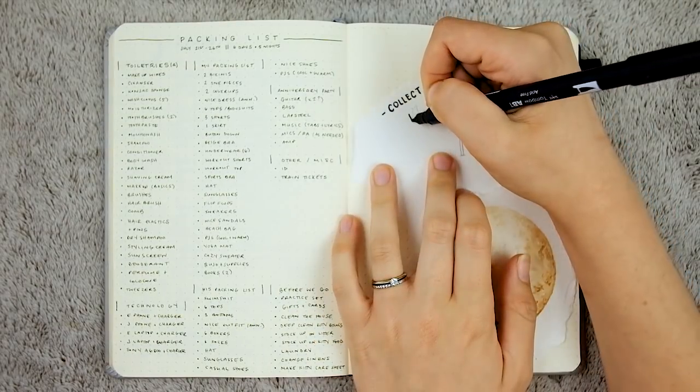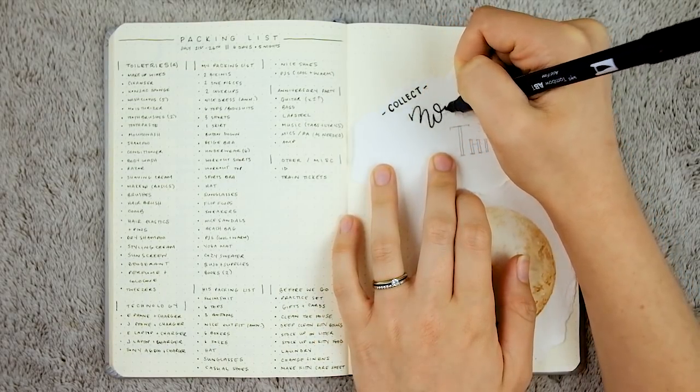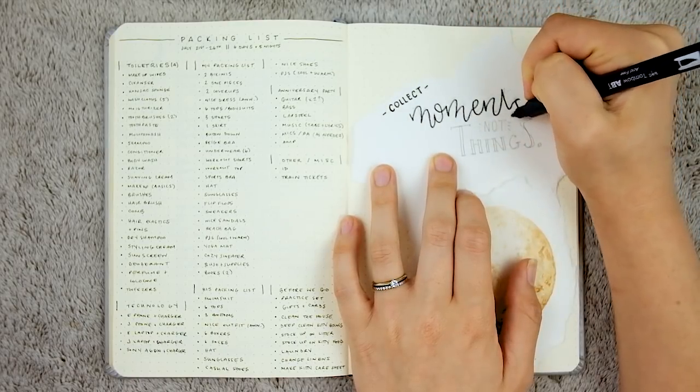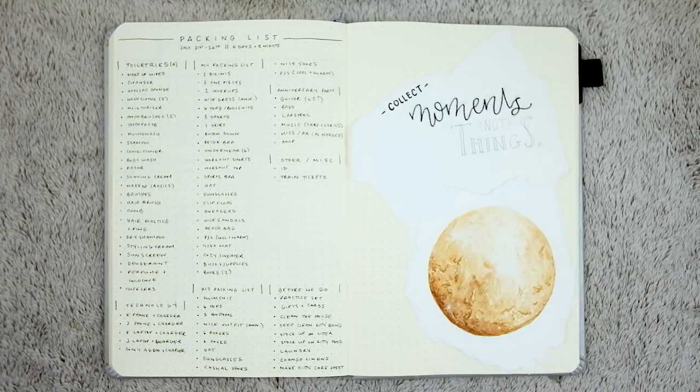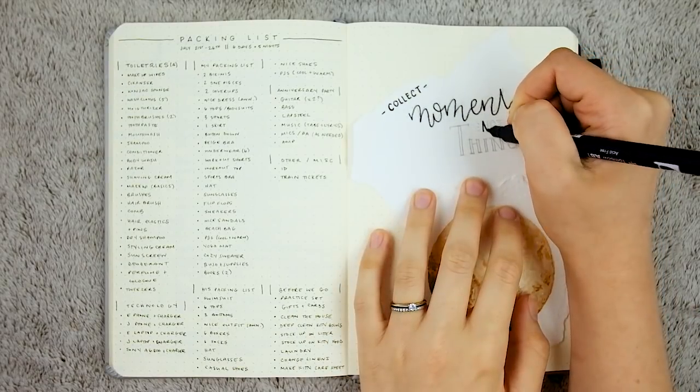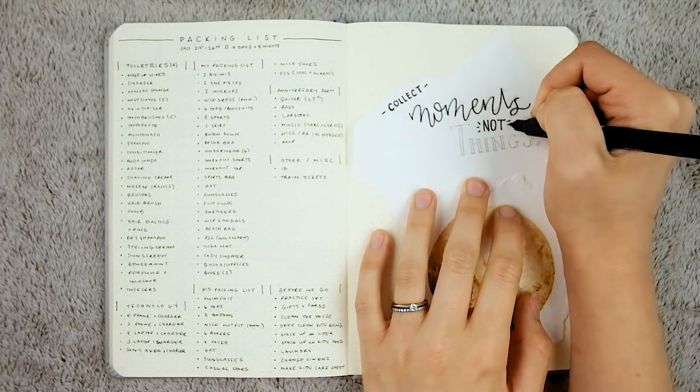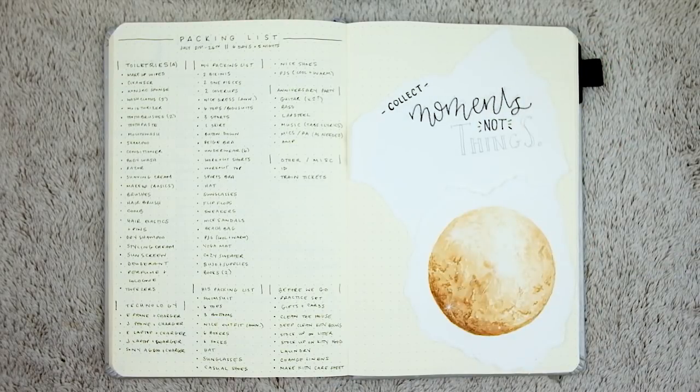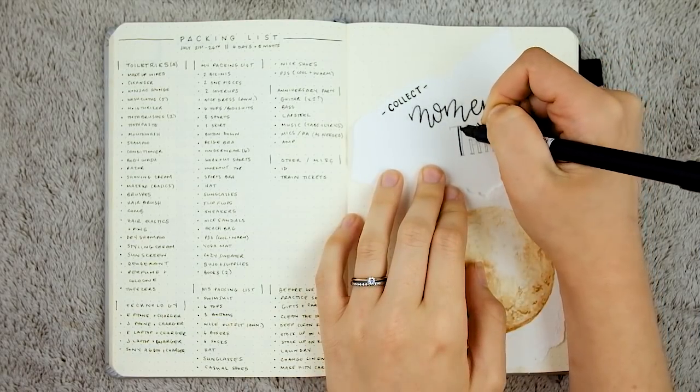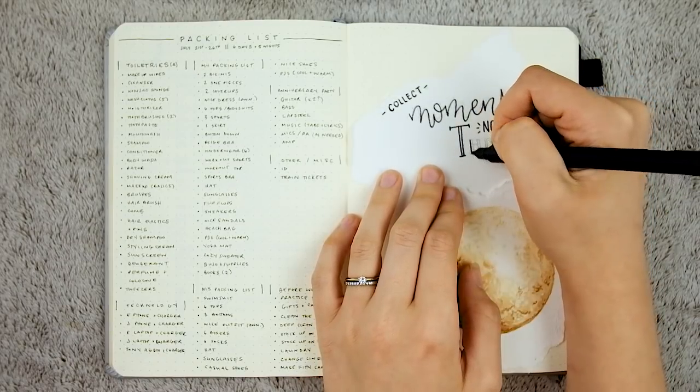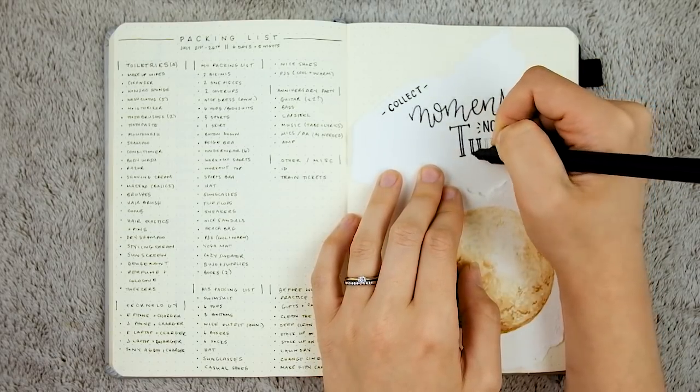I probably didn't need to make a list for this, but as we know I love lists. I left a pretty big open miscellaneous section in case I'd forgotten anything. I ended up just leaving the ID and the train tickets because that's all I needed for that category. Then at the bottom I just made a before we leave to-do list—things we had to do like practice our set, cleaning the house because we had a friend house-sitting, making sure we were stocked up on cat food and cat litter, doing the laundry, changing the linens, all that fun stuff.